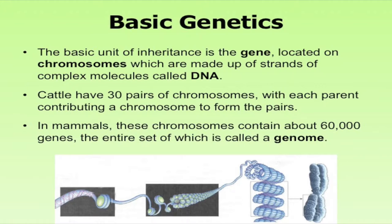That's why we talk a lot about how valuable a bull is — because they contribute half the genetics to each calf, and in a typical commercial operation a bull may be mating about 25 cows, so they can have an impact on as many as 25 calves. These chromosomes contain about 60,000 genes, and the entire set is called the genome.